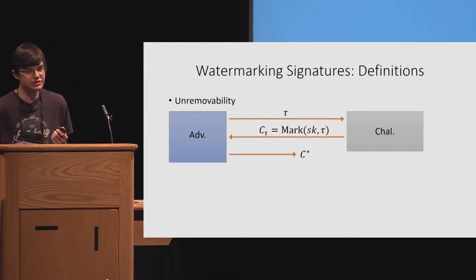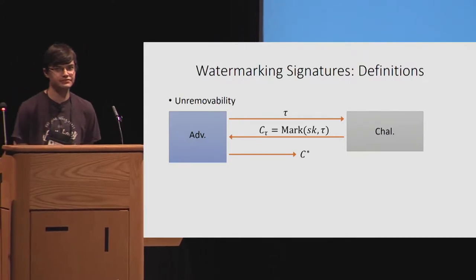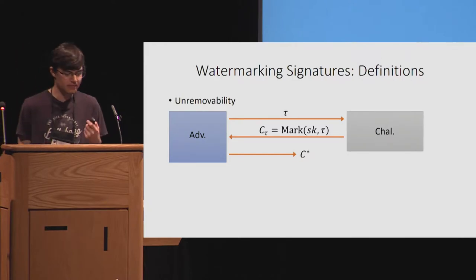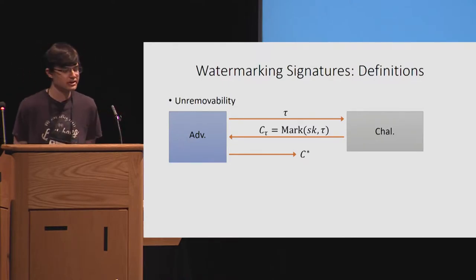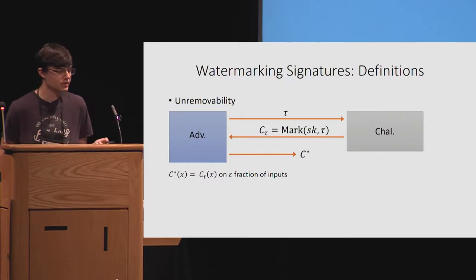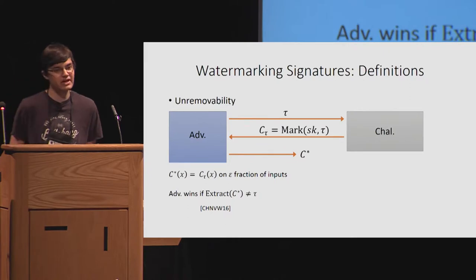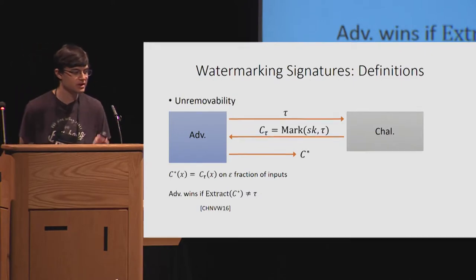Now I'm going to go into the issue with the unremovability definition. The unremovability game is captured as follows: there's a game between an adversary and a challenger. The adversary picks some tag tau and sends it to the challenger and is given back a circuit that implements a marked signing key marked with this tag. The adversary's goal is to output some circuit C star. We require that the adversary's circuit agrees with the marked circuit on an epsilon fraction of inputs — think of epsilon as some majority fraction. The adversary wins the game if the circuit output is not considered to be marked with tag tau, meaning the adversary succeeded in removing the mark but preserved the functionality on some fraction of inputs.